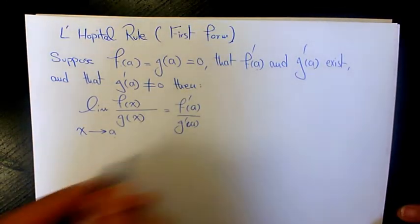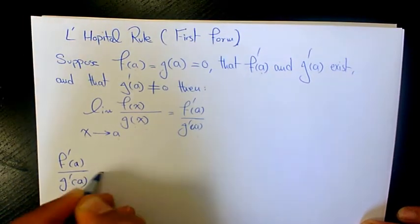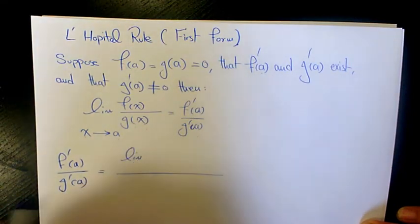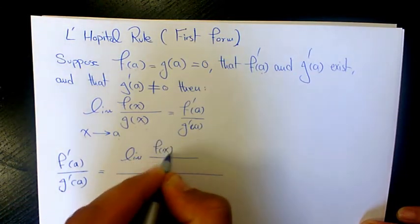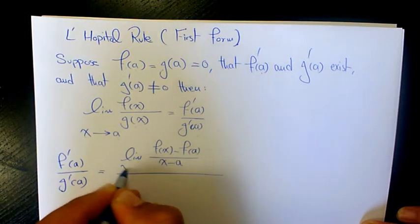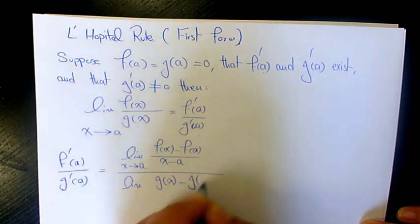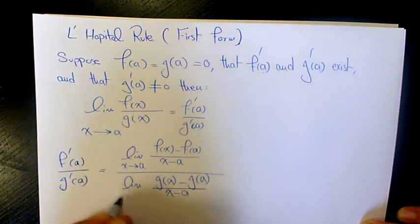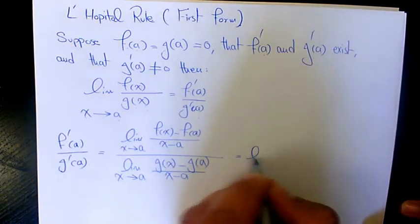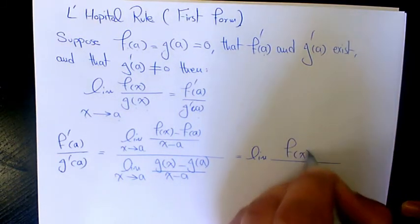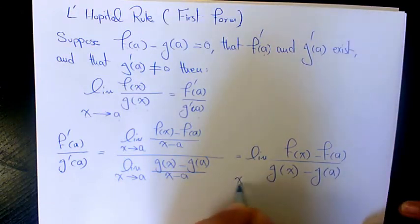So let's prove it. We have f'(a) over g'(a). Based on the definition of first derivative, by first principle, the limit of f'(a) is going to be limit of [f(x) - f(a)] over (x - a) when x approaches a, divided by limit of [g(x) - g(a)] over (x - a) when x approaches a. The (x - a) terms cancel out and it becomes limit of [f(x) - f(a)] over [g(x) - g(a)] when x approaches a.